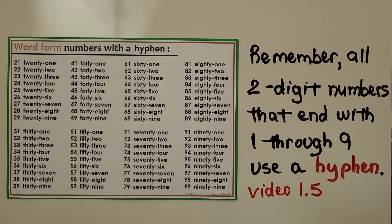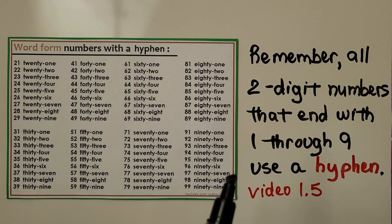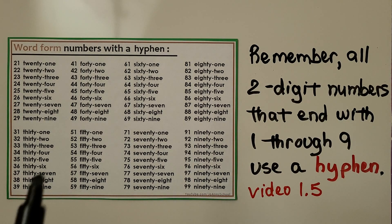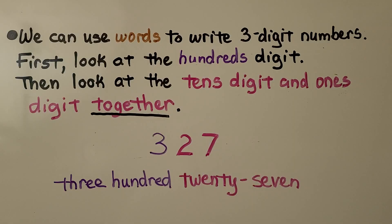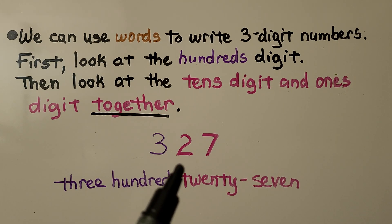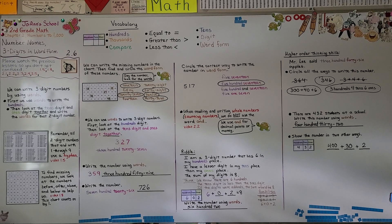Remember, as you write the tens and ones as a two-digit number, you'll need a hyphen if it ends with a one through nine. The first thing we do is look at the hundreds digit and write that amount with the word 'hundred,' then look at the tens and ones digits together and write that number. Our next lesson, 2.7, will cover the different forms of numbers — three ways to write a three-digit number. I hope to see you there, and I hope you're doing very well!